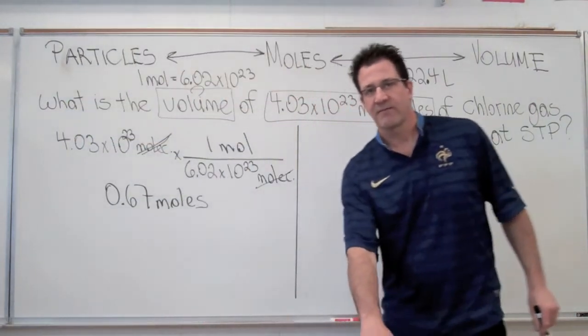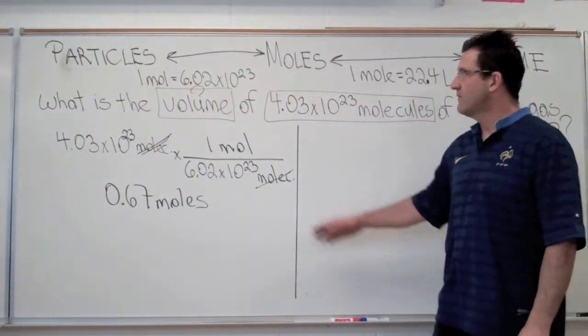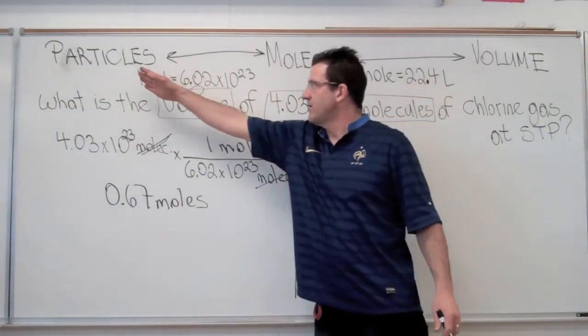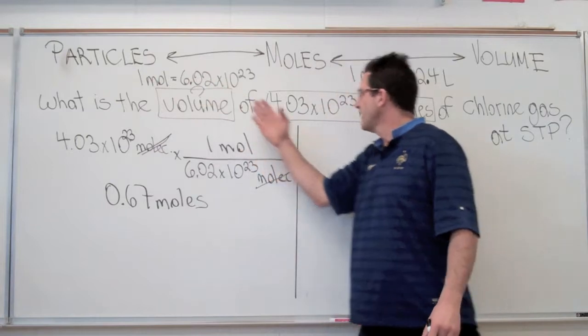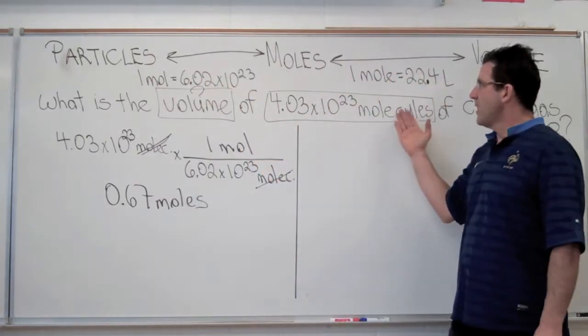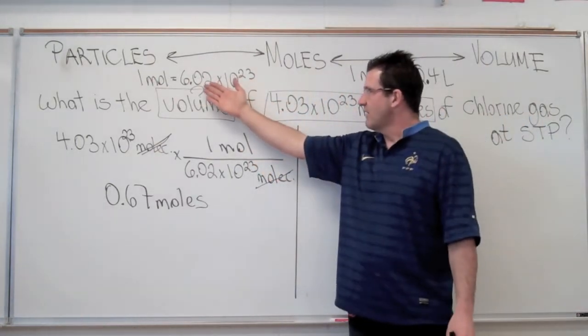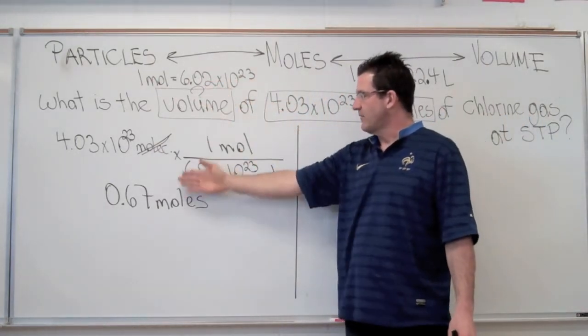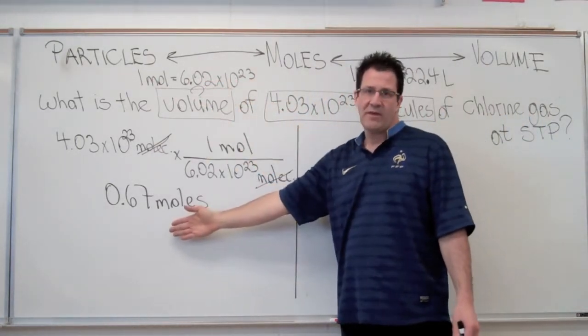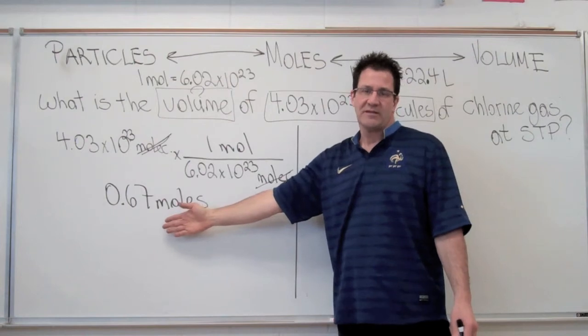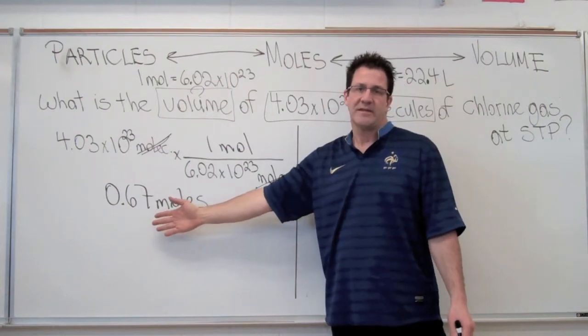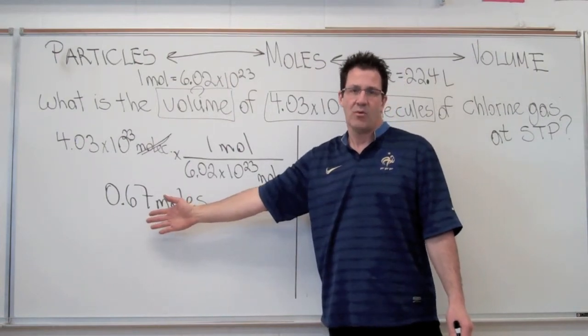In this case we end up with 0.67 moles. So that's the first part of our conversion — we went from the number of particles, in this case molecules, to moles using Avogadro's constant, and we end up with 0.67 moles.